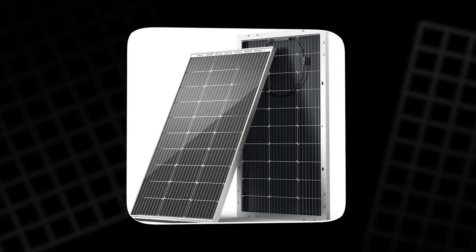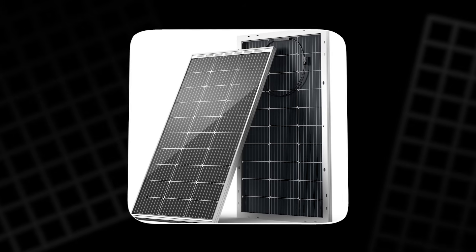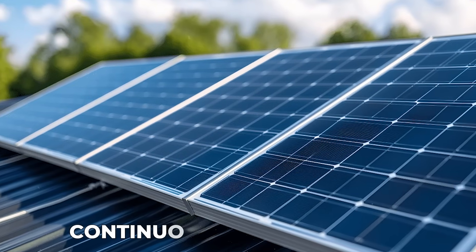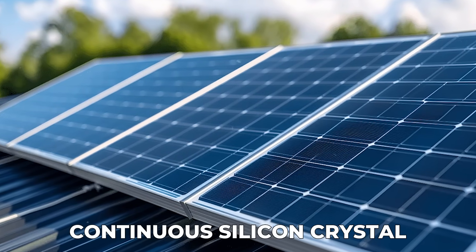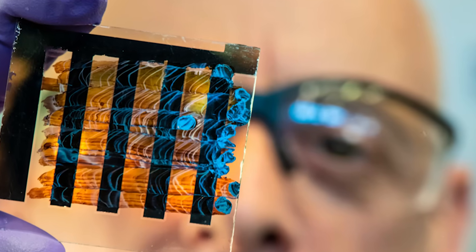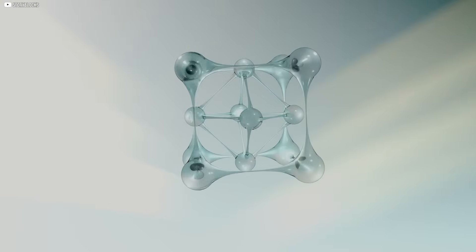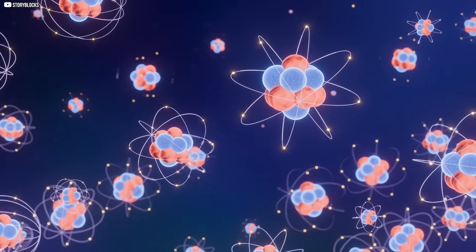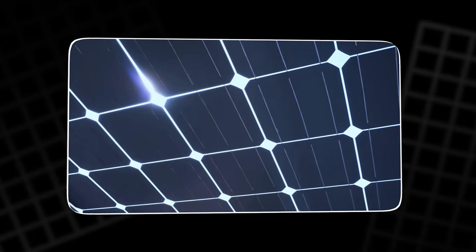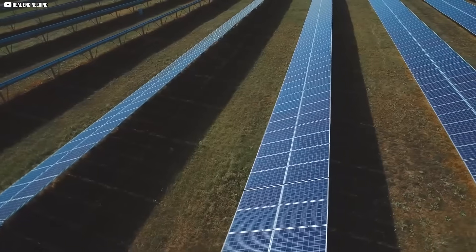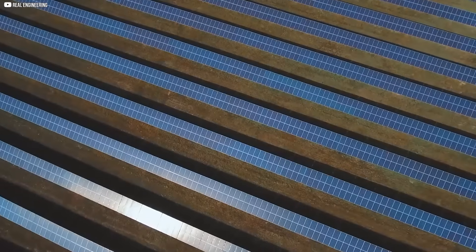On the other hand, the dark, almost featureless panels are monocrystalline. These are built from a single, continuous silicon crystal. Growing one large crystal takes time and precision. But the result is a perfectly aligned atomic structure that helps electrons move more freely. That's why monocrystalline panels usually perform better, especially in low light or when space is limited.